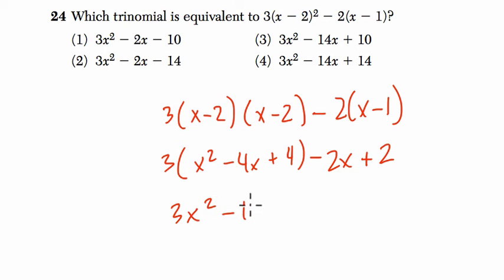So we get 3x squared minus 12x plus 12 and then minus 2x plus 2. So it's 3x squared minus 12x minus 2x is minus 14x plus 12 plus 2 is plus 14. And our answer is choice 4.